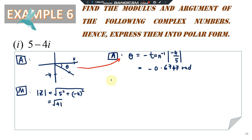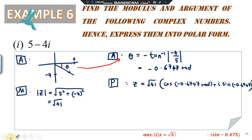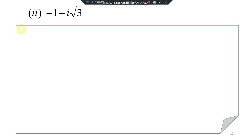The result is negative 0.6747 radians. Step P — polar form: z = √41 (cos(-0.6747) + i sin(-0.6747)). That is the same angle in both cosine and sine. The answer is correct — either negative 0.675 or negative 0.6747 is acceptable.